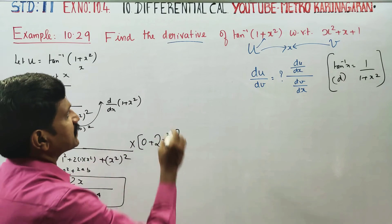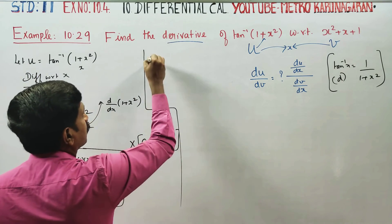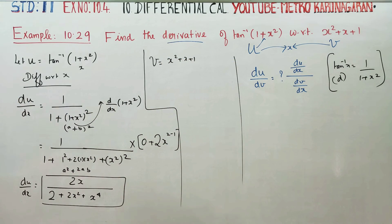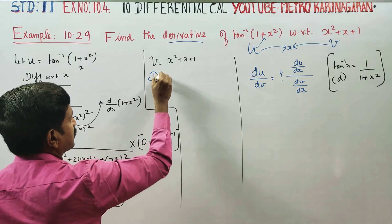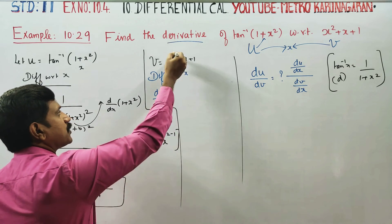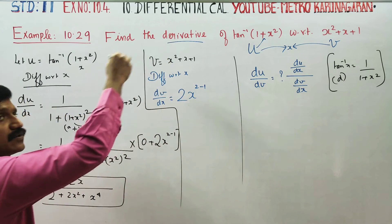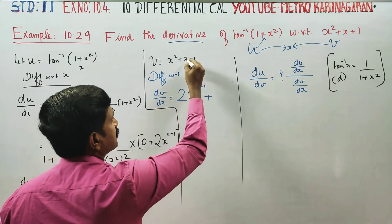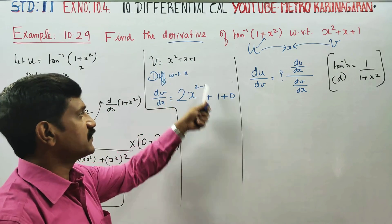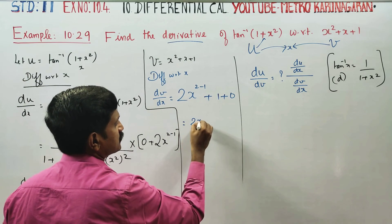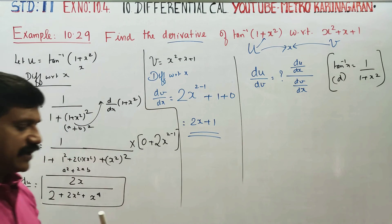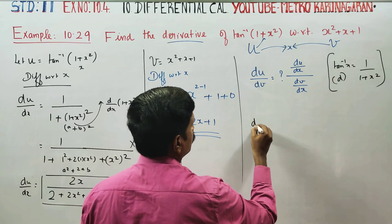Now we need dv by dx. V is equal to x square plus x plus 1. Differentiate with respect to x: x square differentiates to 2x (power 2 brought to front, minus 1), x differentiates to 1, and the constant 1 differentiates to 0. Therefore dv by dx equals 2x plus 1.